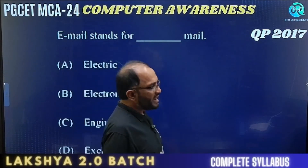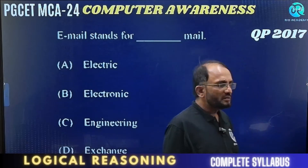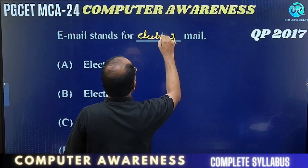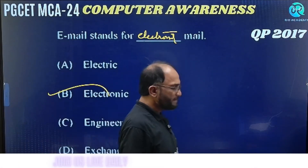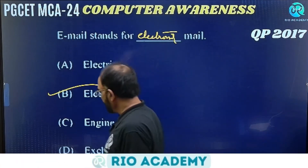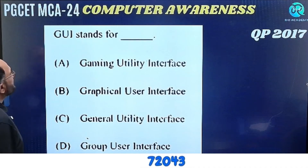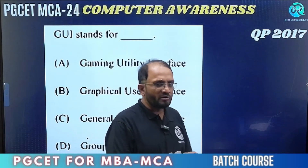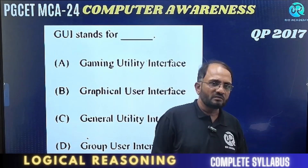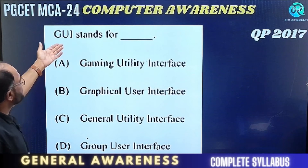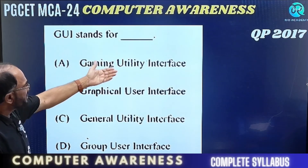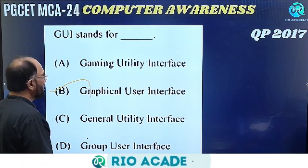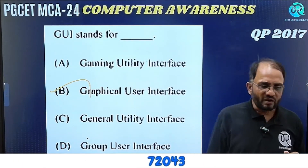E-mail stands for dash mail — it is nothing but Electronic Mail. Now, GUI stands for — you must know the short forms of many computer terminologies. The options are: Gaming Utility Interface, Graphical User Interface, General Utility Interface, Group User Interface. The answer is Graphical User Interface.